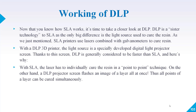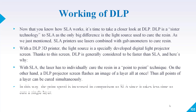In SLA, the laser cures the resin using a point-to-point technique. In DLP, the projector screen flashes an image of an entire layer all at once, so all points of a layer can be cured simultaneously. This increases print speed compared to SLA, since it takes less time to cure a single layer.